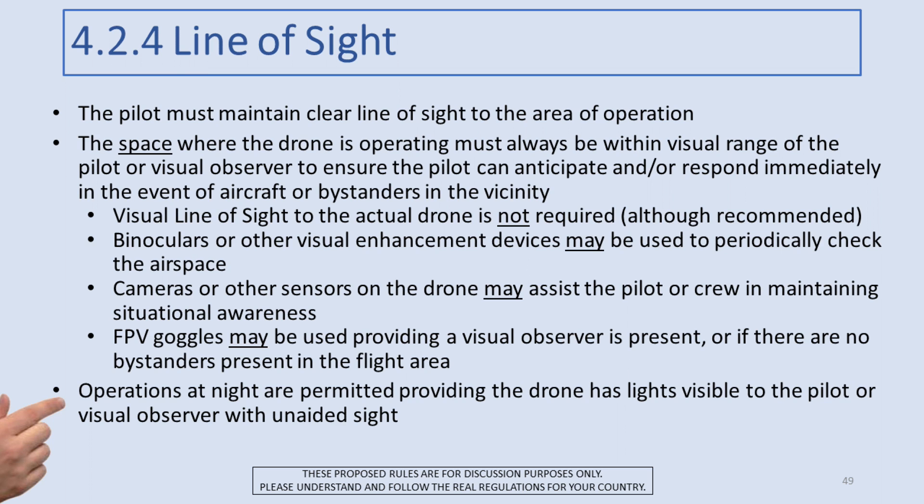Operations at night are perfectly fine as long as the drone has lights on it that you can see with the naked eye — that way you can tell where it is and where it is with respect to other objects in the area.